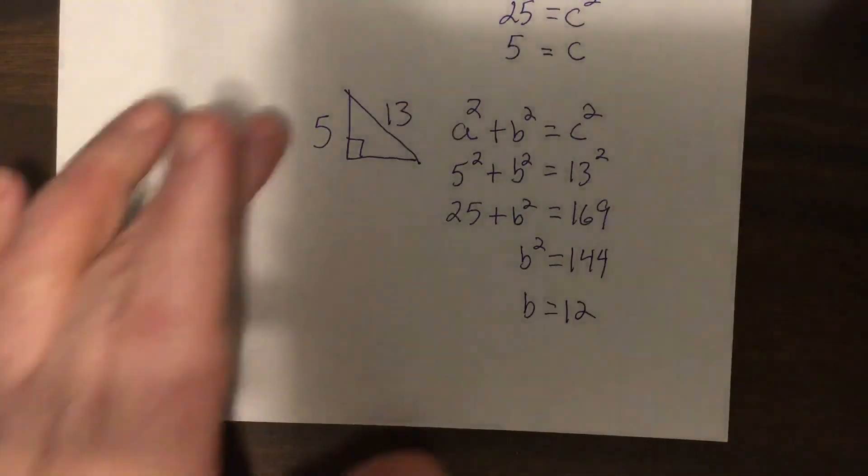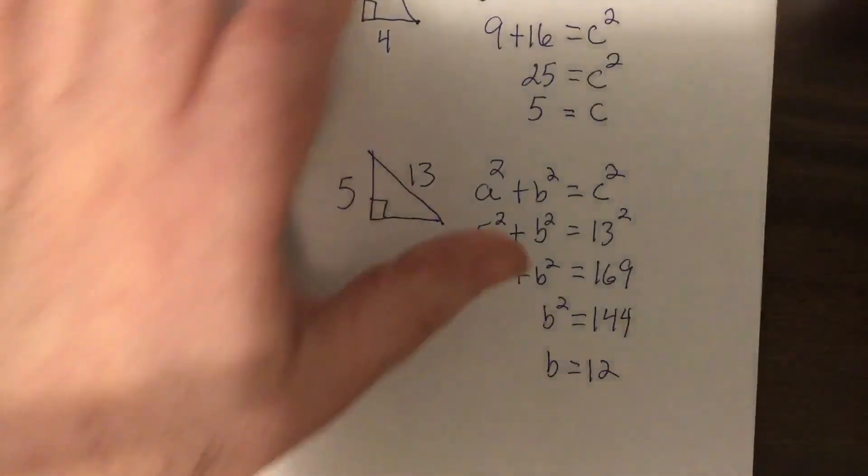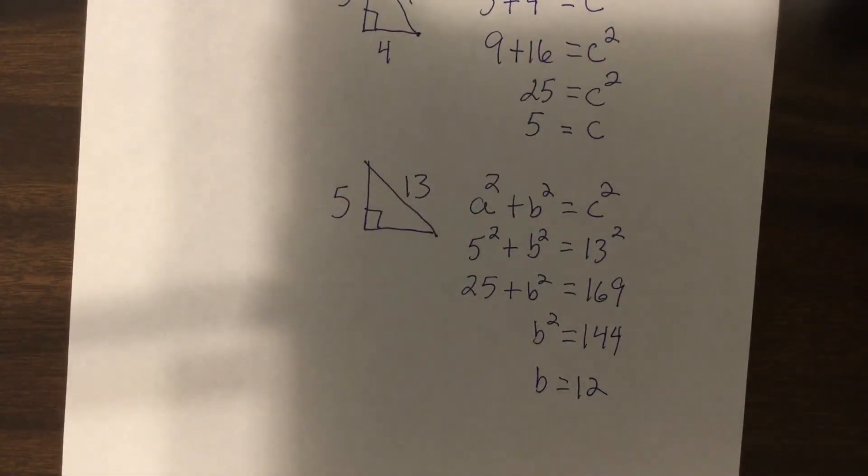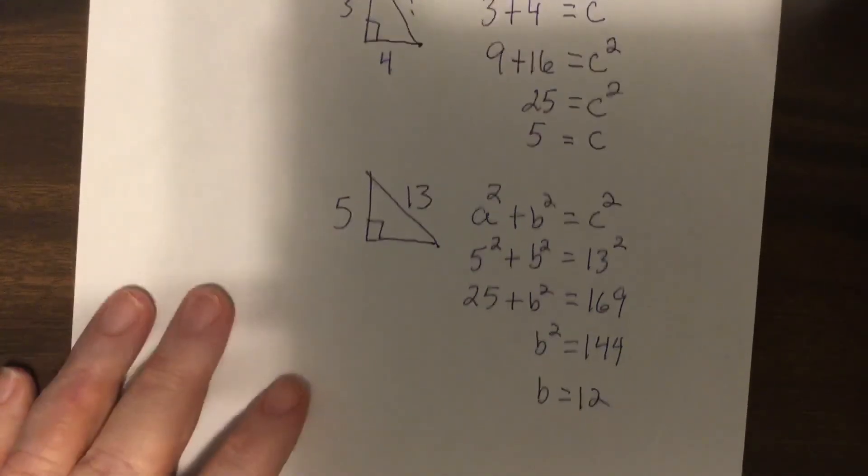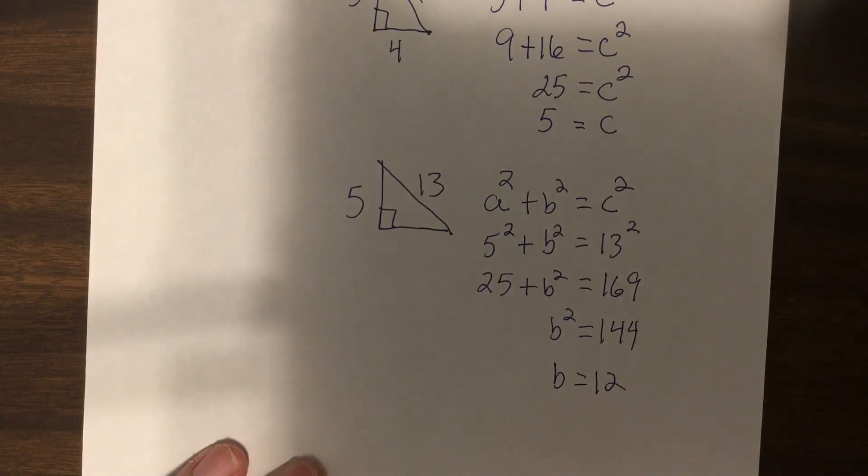So it's a 5, 12, 13 triangle. I've done the two nice ones with nice answers. That's the Pythagorean theorem. I think I'm going to stop there and do the other two formulas in another video. Thank you very much.